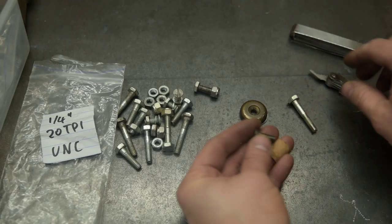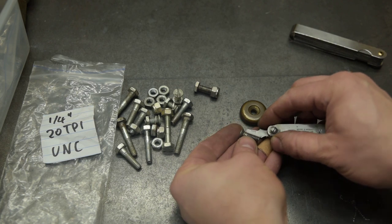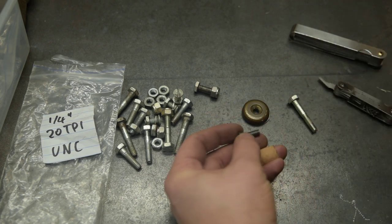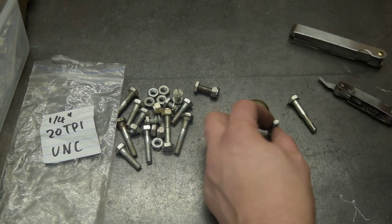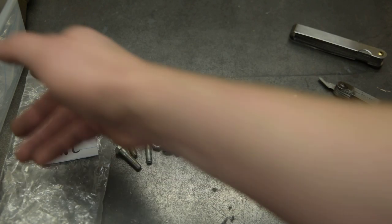Okay well after measuring up this screw you can see that it's 20 TPI and a hair under quarter inch so I think it's a quarter twenty UNC.